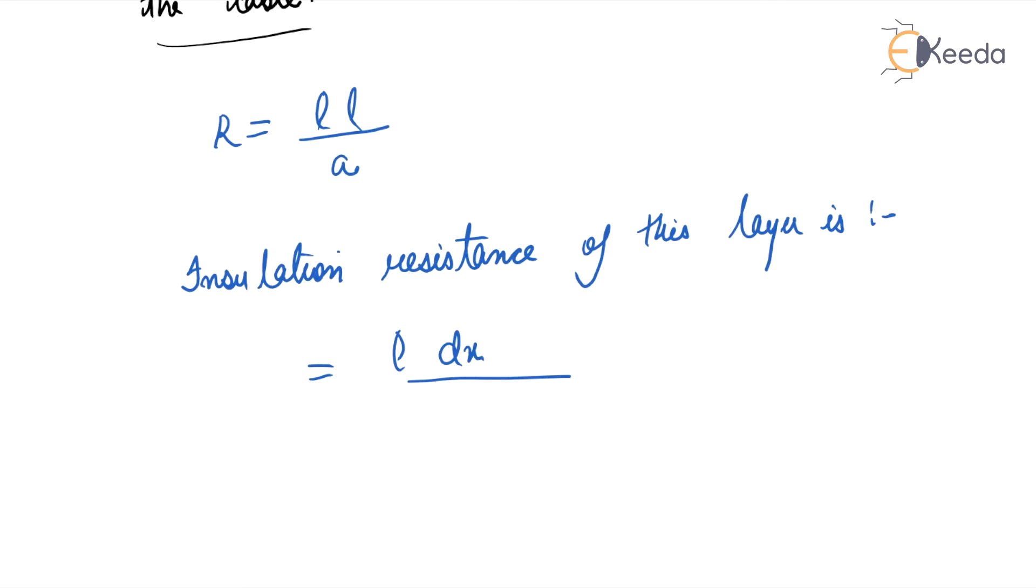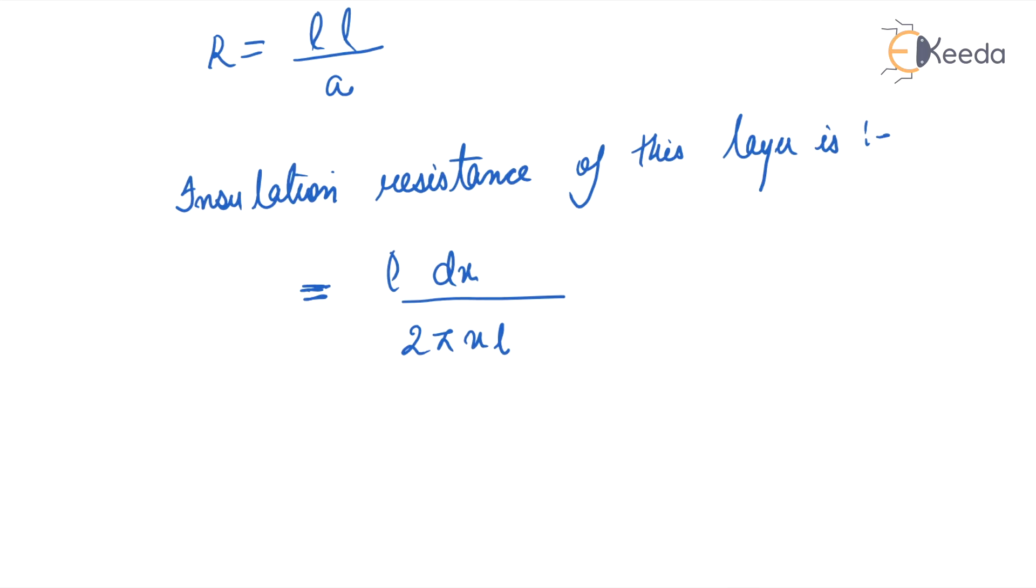This dx is the radial thickness, and 2πxL is the area of the cross section.